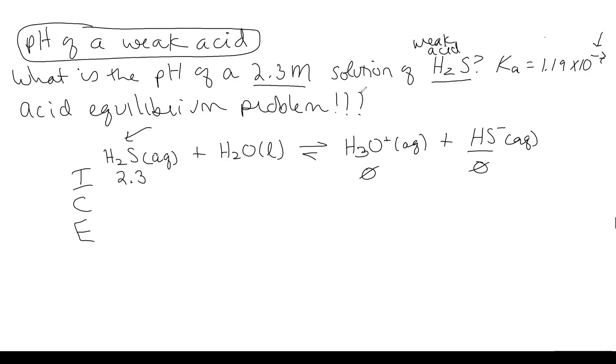So that means we're only given 2.3 molar of our acid, but we aren't given any concentration of the hydronium or our conjugate base. So those are going to be 0. And that's important because on the second line, change, we need to figure out which way this equilibrium is going to shift.